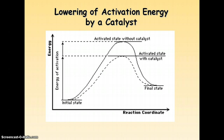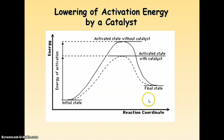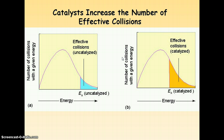Here you see a potential energy diagram for a catalyst. It shows you that the catalyst — the dotted line — actually lowers the activation energy. It does not change the overall energy of the reaction, only lowers the activation energy.